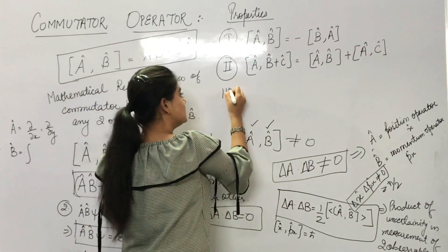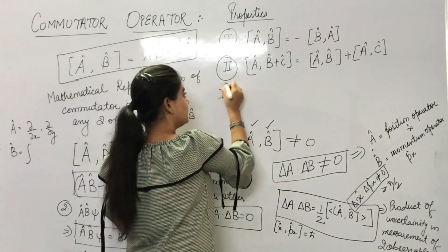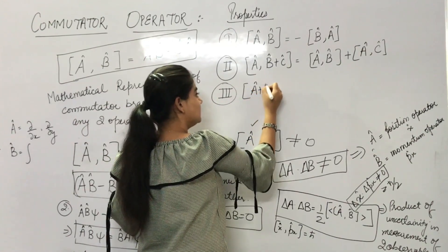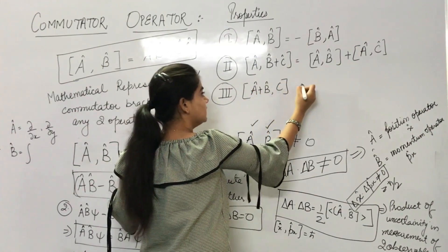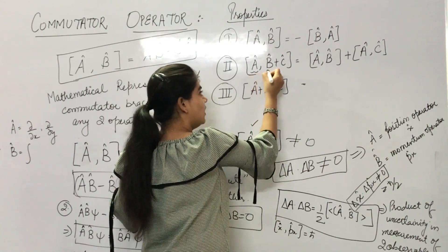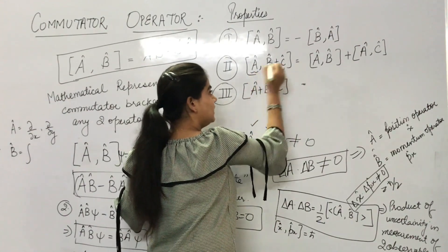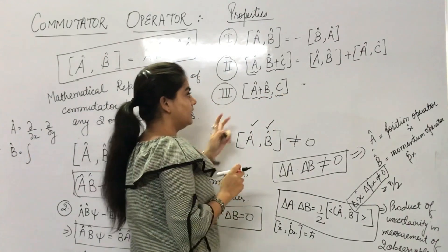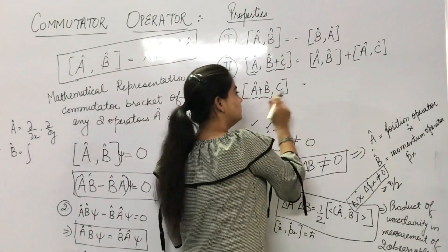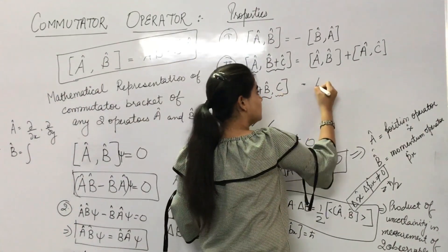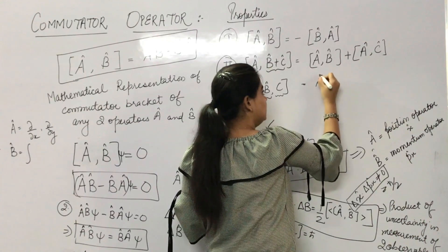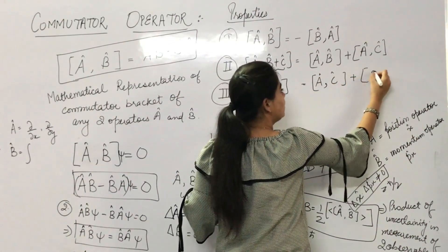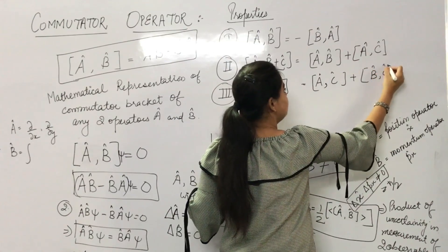Third property: [A+B, C] = [A, C] + [B, C]. Here A+B is one combined quantity and C is a separate observable.